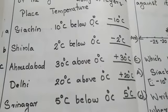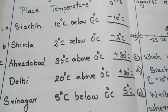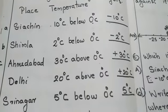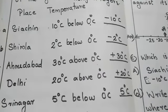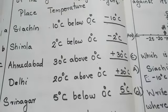Shimla. 2 degree Celsius below 0 degree Celsius. Again, below, less than 0. Negative 2 degree Celsius. Third one.